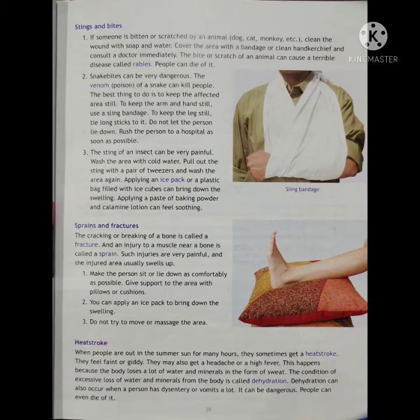Sprains and fractures. Moch and bhang, matlab haddi bhangna, haddi ka tutna. The cracking or breaking of a bone is called a fracture. Wo hi ki haddi ka tutna ya usmein tirar hona. Ise fracture kehte hain. An injury to a muscle near a bone is called a sprain. Muscle mein, bone ke paas jo muscle hota hai, usmein injury hona wo sprain, moch kehte hain.